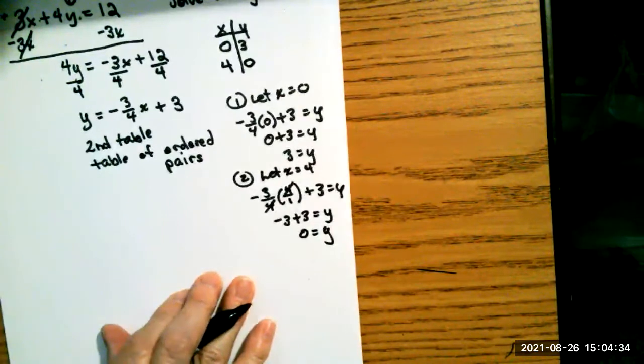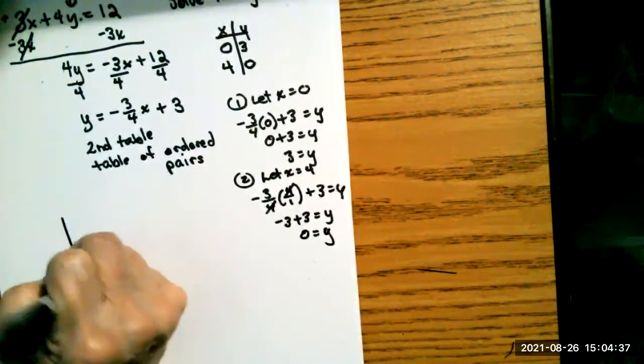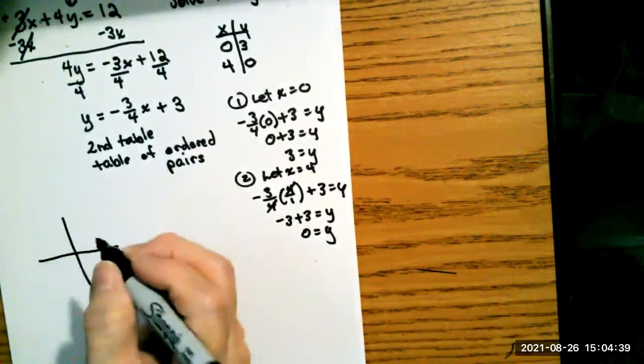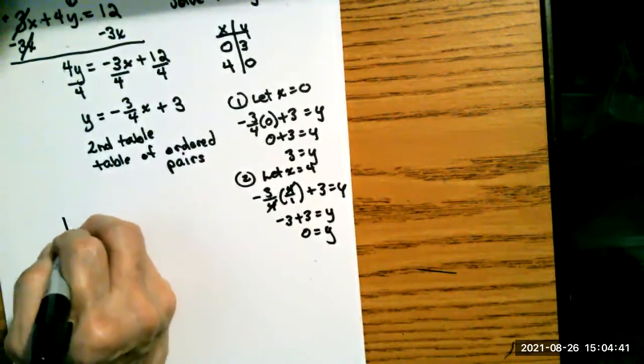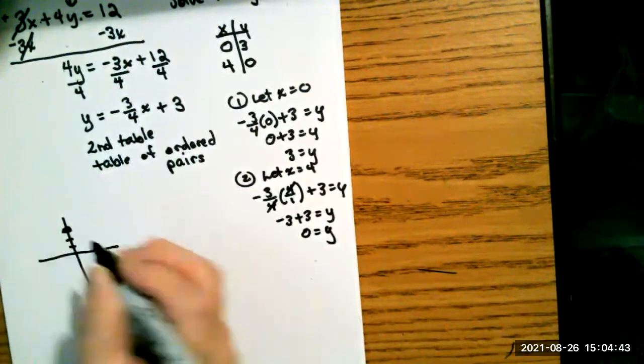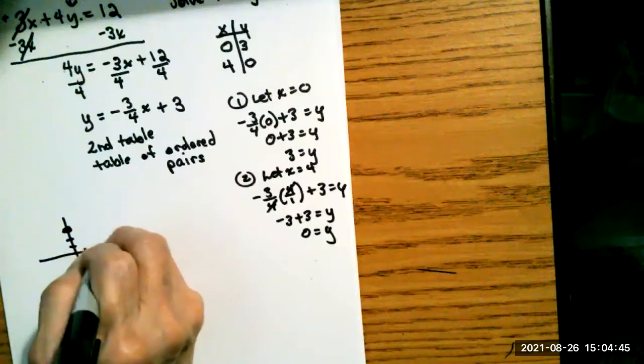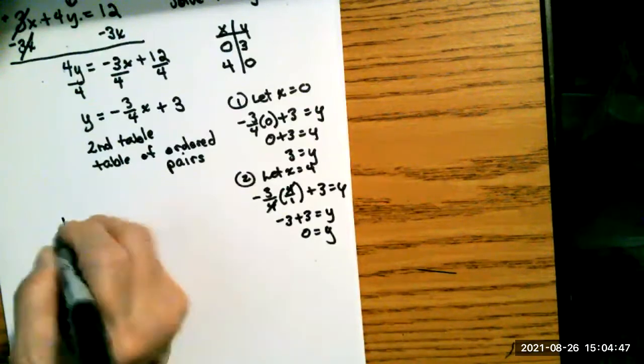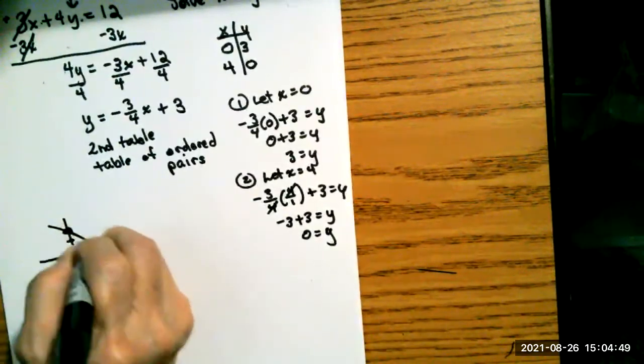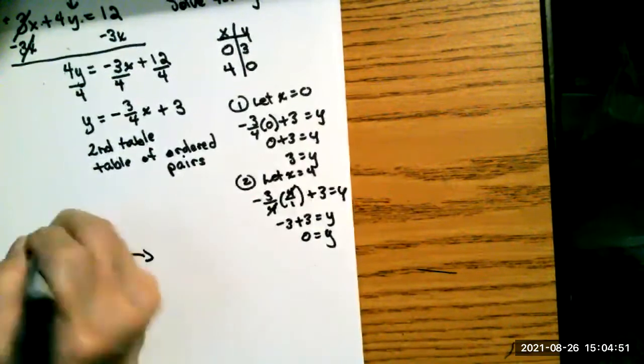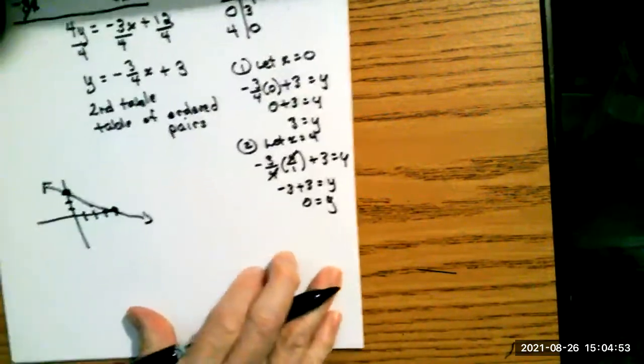Let's have two ordered pairs to graph. 0, 3 and 4, 0. 0, 3 would be 0 over 3 up. 4, 0 would be 4 over 0 up. And there's my line that goes across there. And see, it's supposed to be a straight line.